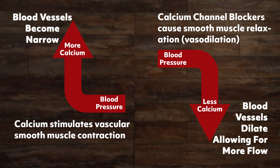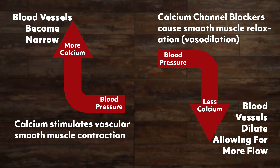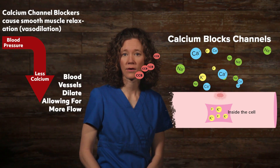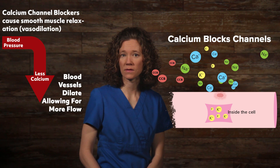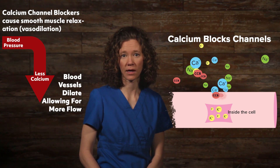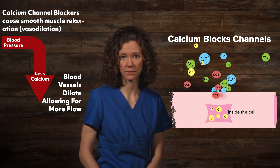Calcium channel blockers are a class of drugs that block calcium from entering into the cells of heart and blood vessel muscles. So when a patient has high blood pressure, angina, or heart arrhythmias, calcium channel blockers block calcium from entering the cell by binding to the L-type calcium channels.